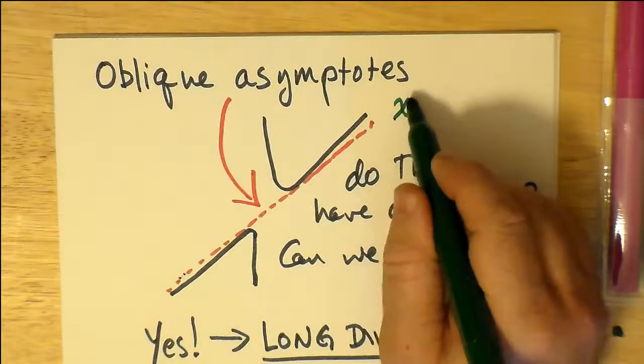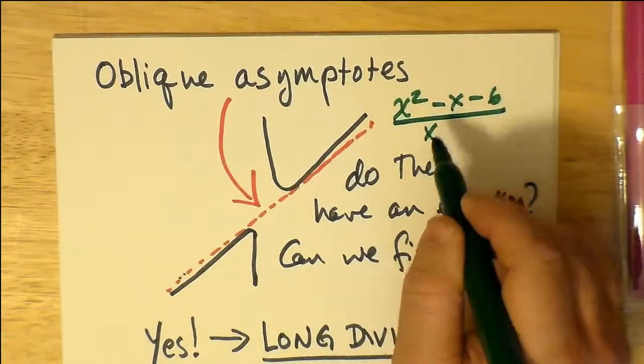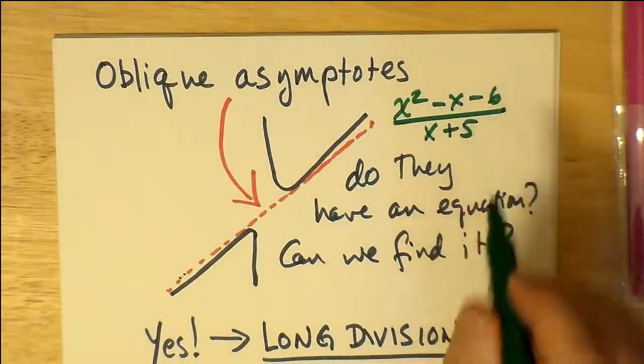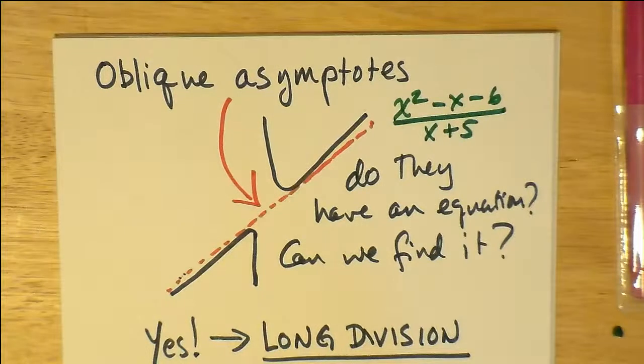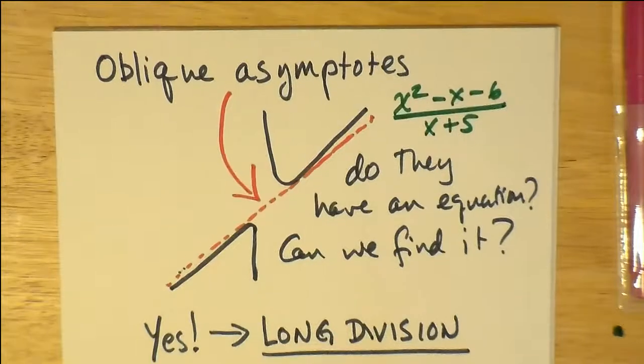And just for completeness, we'll just add in this equation that this is actually the equation of x squared minus x minus 6 all divided by x plus 5. Or at least, that's what this graph represents. It's definitely not an entirely accurate graph.